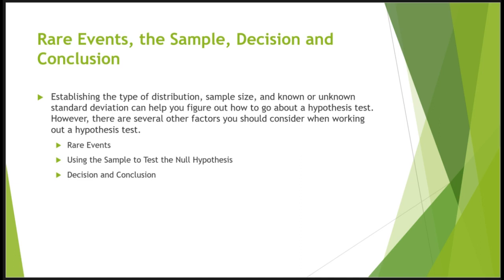The binomial distribution of a sample proportion can be estimated by the normal distribution where mu equals p and sigma equals the square root of pq divided by n, where q is just 1 minus p. Next, we have rare events. Suppose you make an assumption about a property of the population — that assumption is the null hypothesis. If the sample has properties that would be very unlikely if the assumption is true, you conclude that your assumption is probably incorrect. The assumption is not a fact; it may or may not be true, but your sample data are real and seem to contradict it.